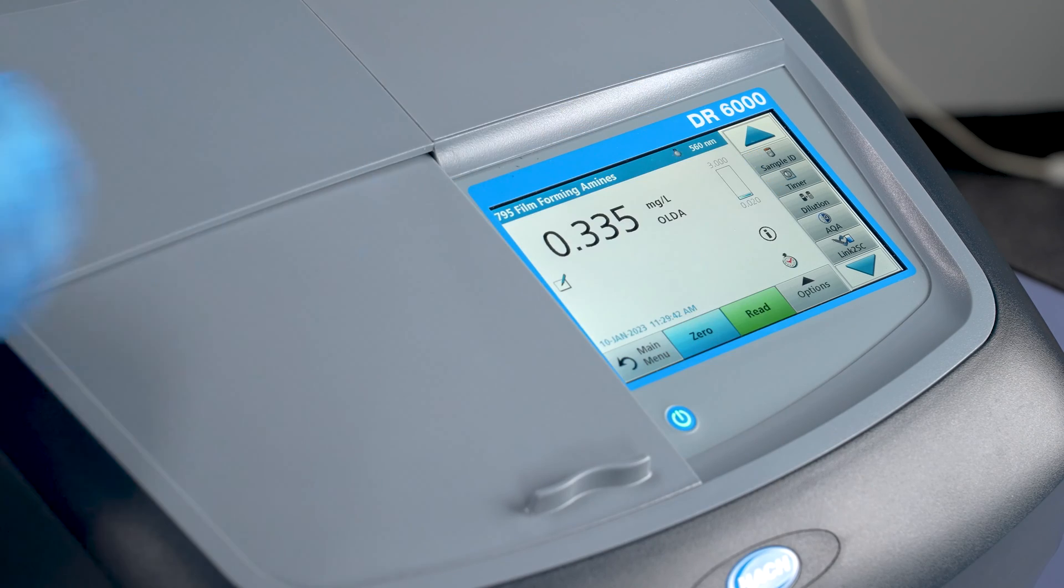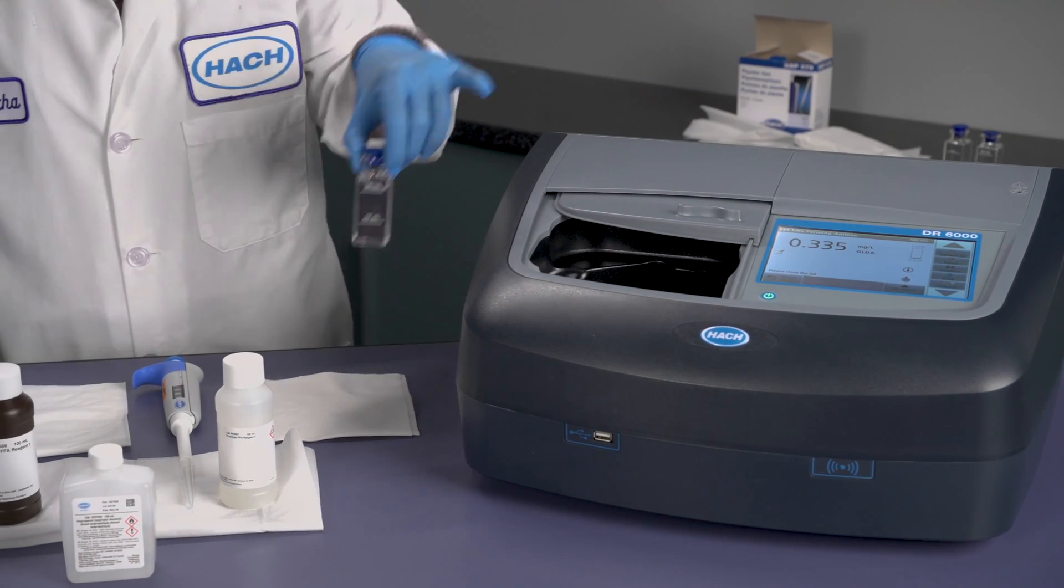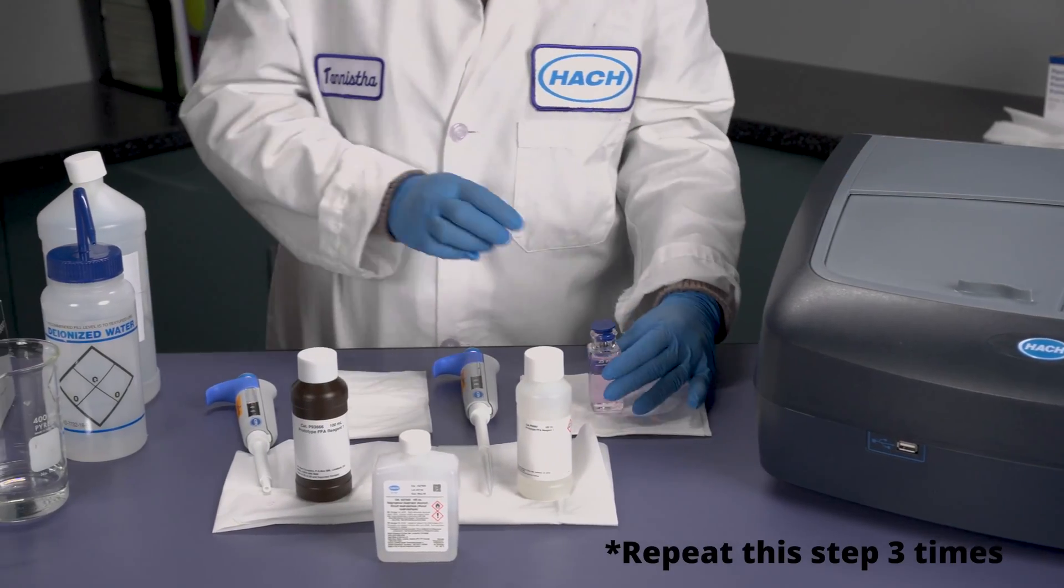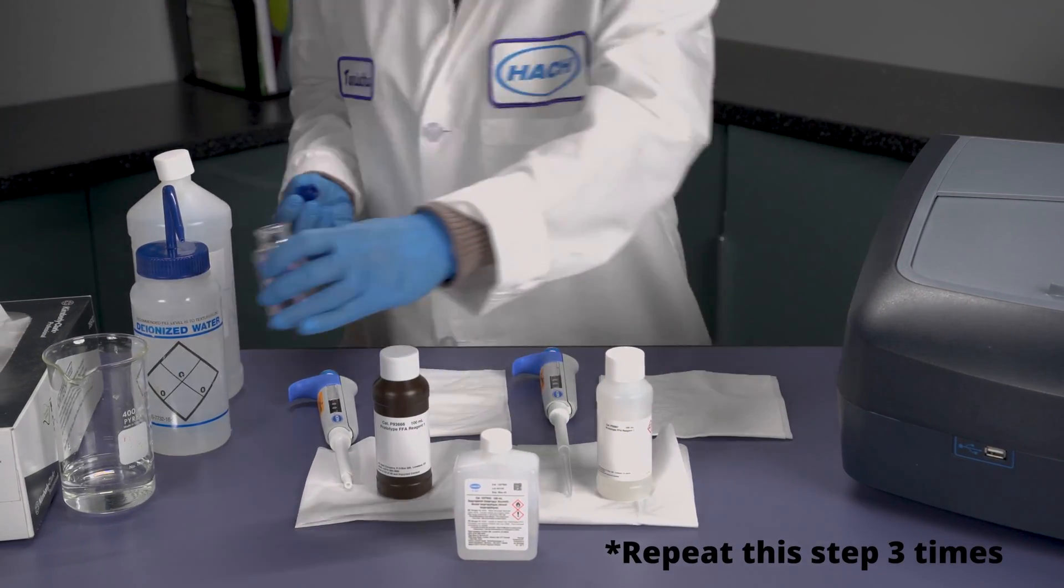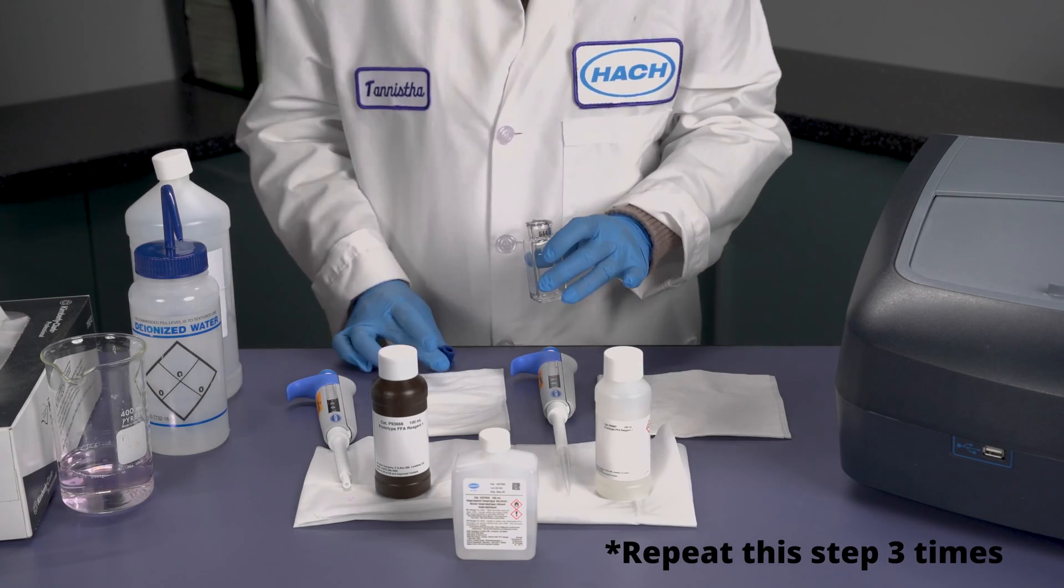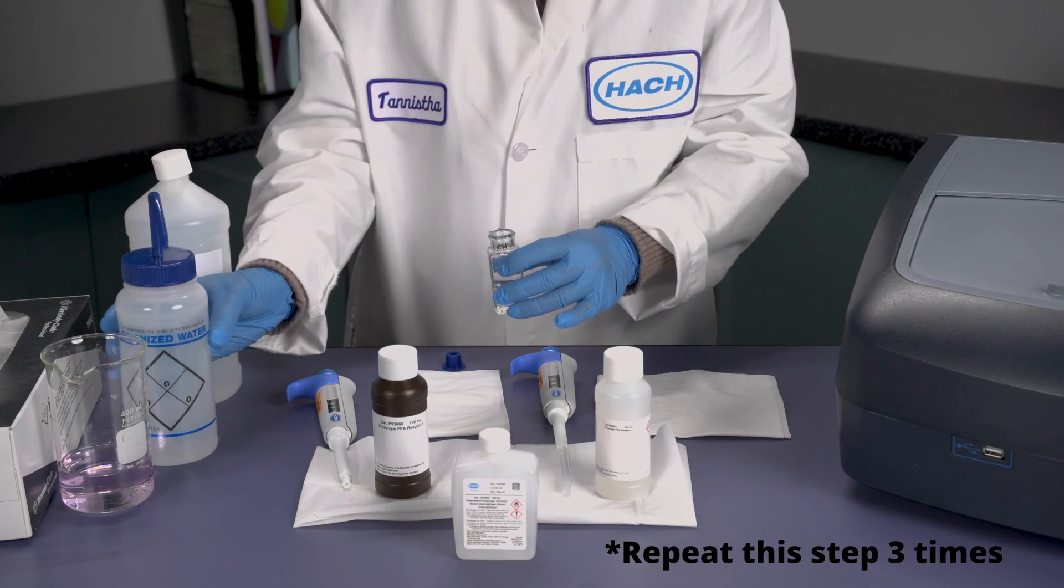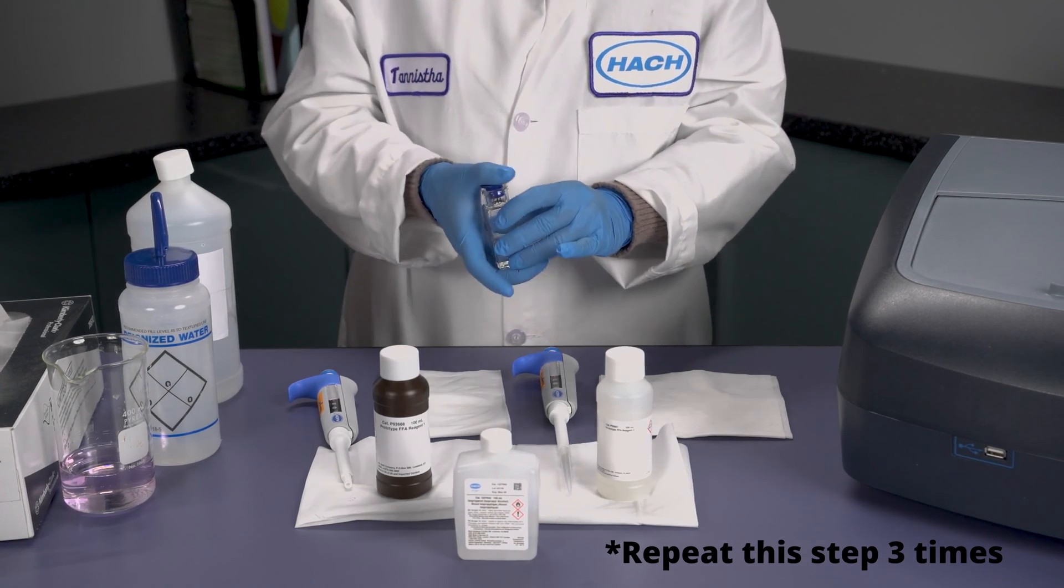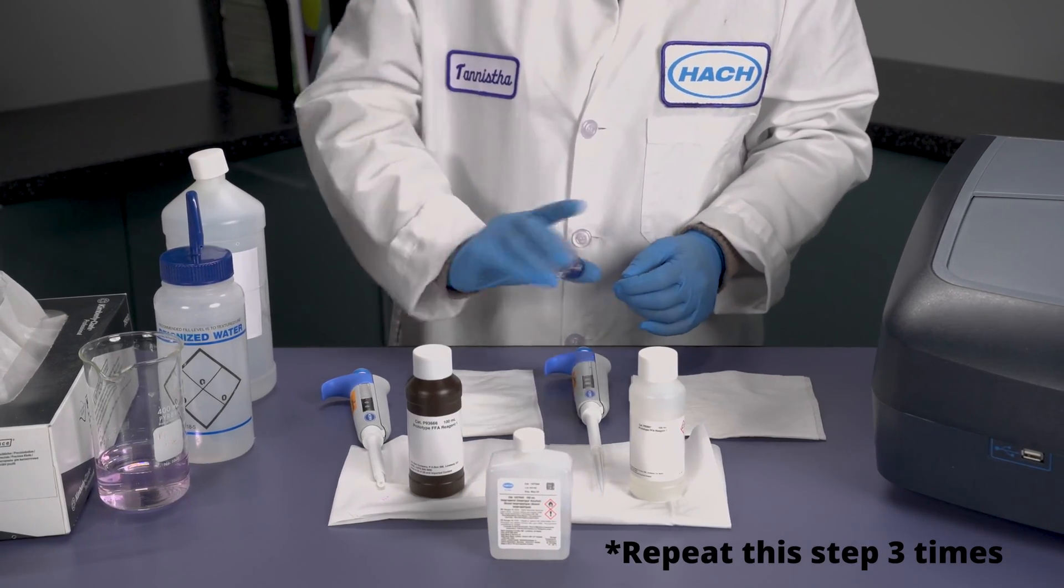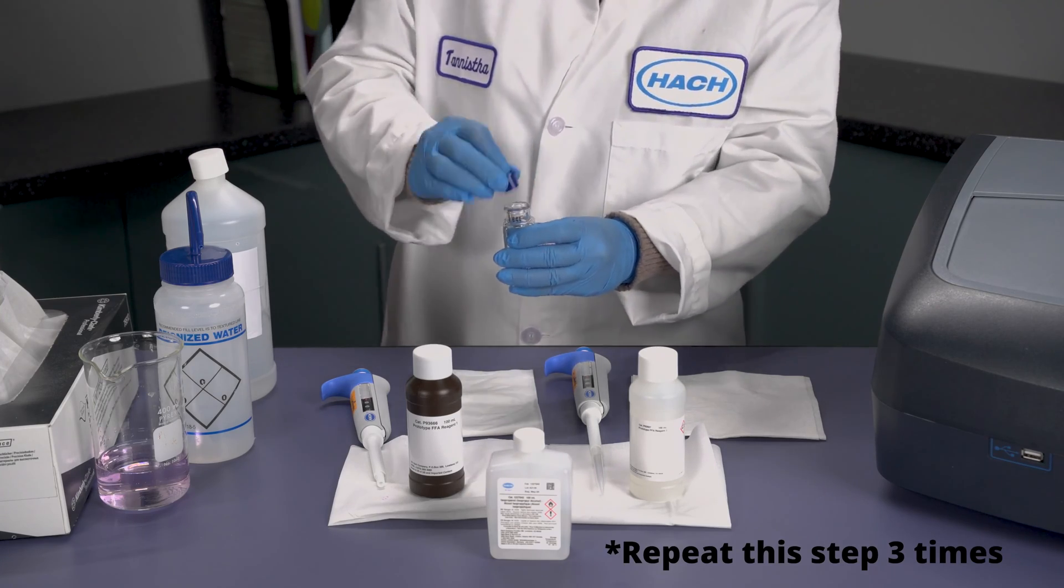Once you have your reading, it is important to very quickly clean your sample cell. Take the sample cell, empty it from the sample, and rinse the sample cell three times with deionized water. It's very important now to start shaking. We only invert during the test, but in cleaning, it's important to shake vigorously.